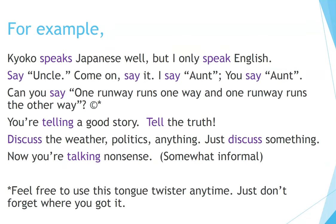For example: Kyoko speaks Japanese well, but I only speak English. Say uncle — come on, say it. I say aunt, you say aunt. Can you say 'one runway runs one way and one runway runs the other way'? You're telling a good story. Tell the truth. Discuss the weather, politics, anything — just discuss something. Now you're talking nonsense. This is somewhat informal. Feel free to use this tongue twister anytime.